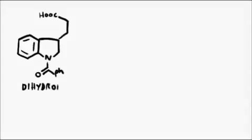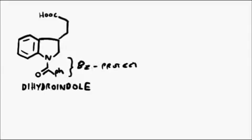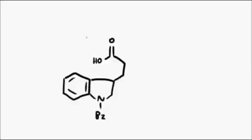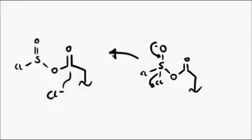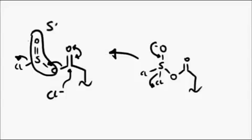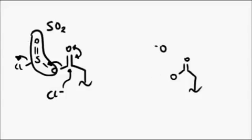The starting material for this synthesis was a dihydroindole, which bears a benzoate protecting group. You can see the structure is fairly similar to tryptophan. The first step was to use thionyl chloride to convert the acid group into an acid chloride. The intermediate pushes out a chloride ion, which then displaces a molecule of sulfur dioxide, and an acid chloride is generated.